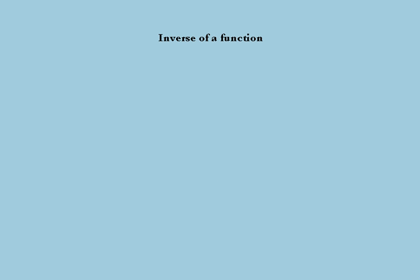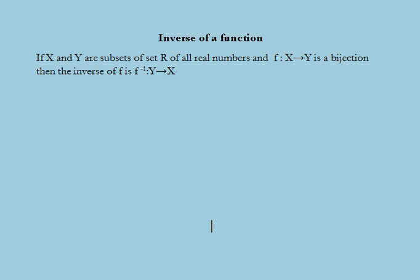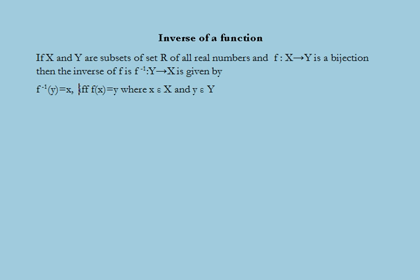Next we consider the inverse of a function. If X and Y are subsets of the set ℝ of all real numbers and f: X → Y is a bijection, then the inverse function f⁻¹: Y → X is given by f⁻¹(y) = x if and only if f(x) = y, where x ∈ X and y ∈ Y.